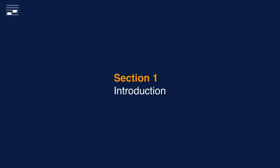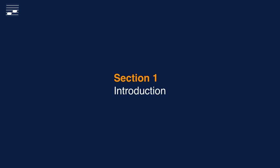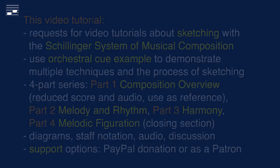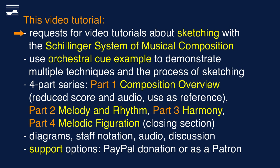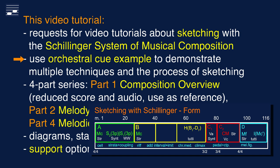In case you already watched part 1, the overview, you may want to skip this section and fast forward to section 3. Over the years I've uploaded many tutorials about techniques from the Schillinger system of musical composition, with fundamentals and numerous examples. Viewers have been asking: please could you demonstrate the sketching process in more detail? Show me how you get from a basic sketch with a single or combination of Schillinger techniques to the final version of a piece of music. My answer is this four-part series built around an original orchestral composition.